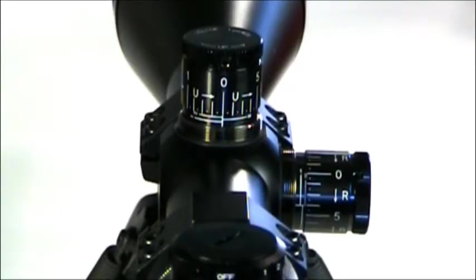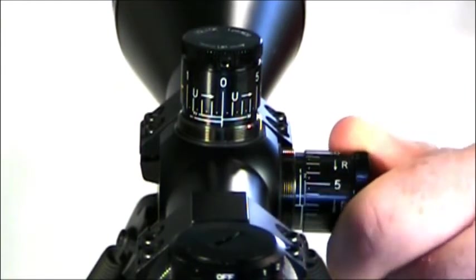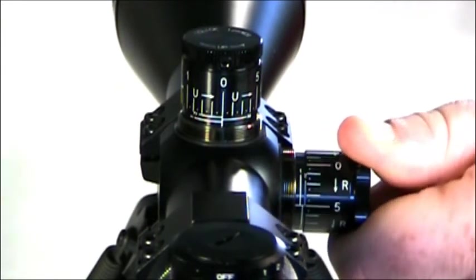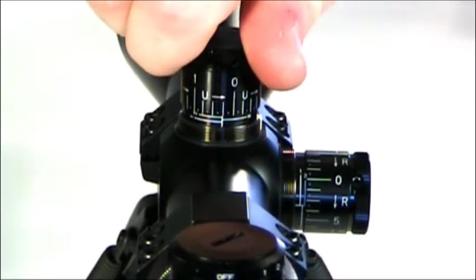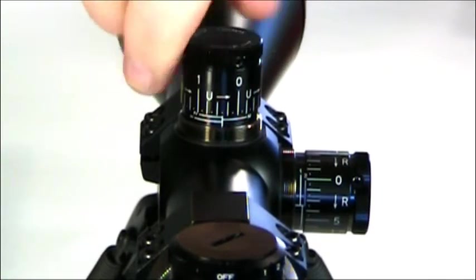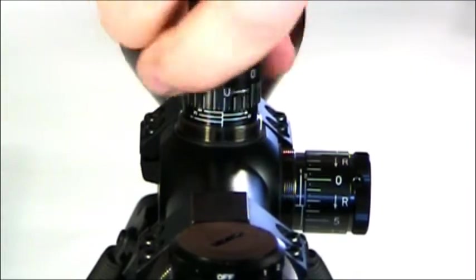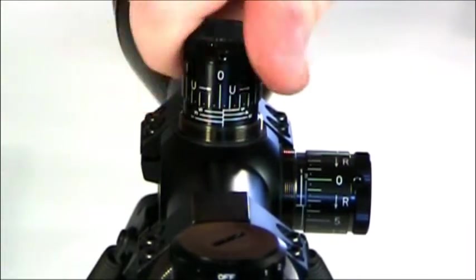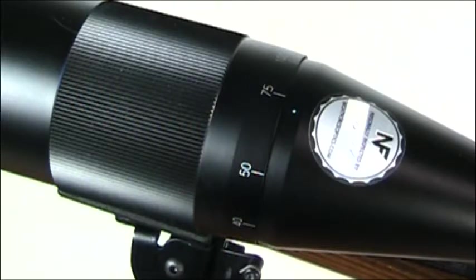Here's another angle looking at the turrets. You can see the lines. Turrets perfectly match up the lines with the indications. And depending on what revolution you're on, there's little lines to indicate that.